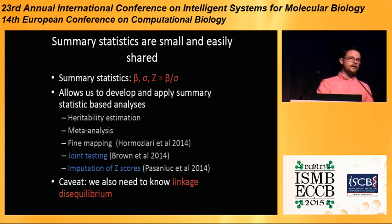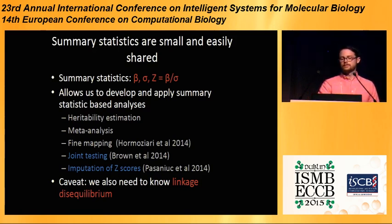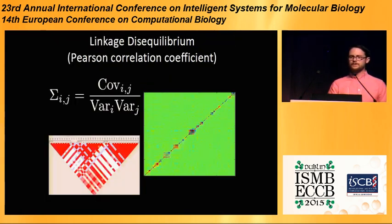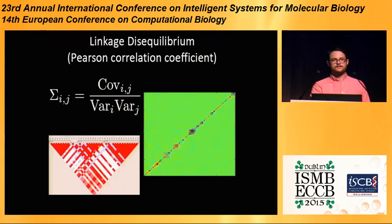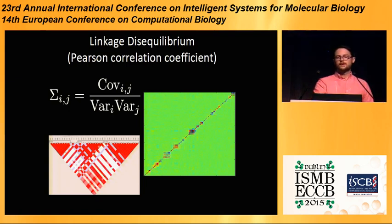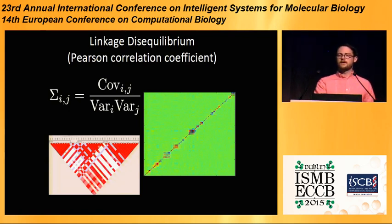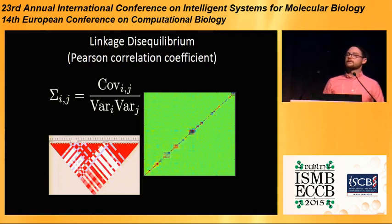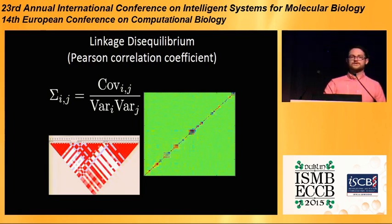The big caveat with using these summary statistic-based methods is that a lot of times you need to know linkage disequilibrium, and this is very rarely, if ever, shared. In this talk, there are a lot of ways to define LD — I'm going to be talking about the Pearson correlation coefficient, sigma, which is the covariance divided by the square root of the variances. A lot of times you'll probably be used to seeing the plot where red means more correlated, but in fact we're going to be thinking about it as just a matrix of Pearson correlation coefficients.